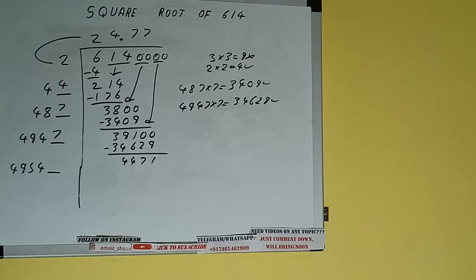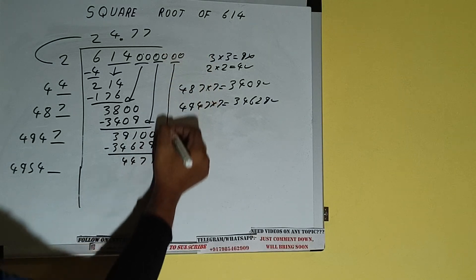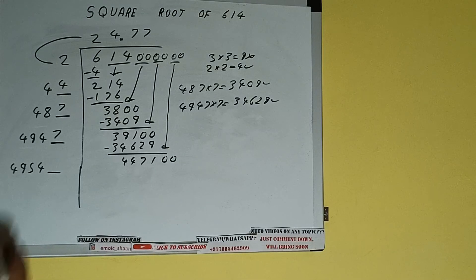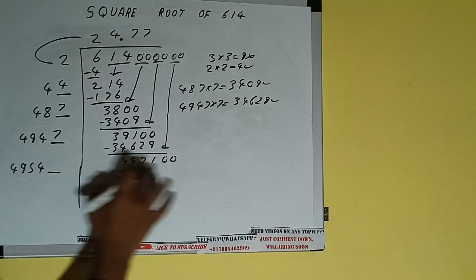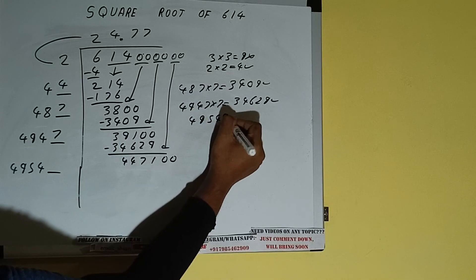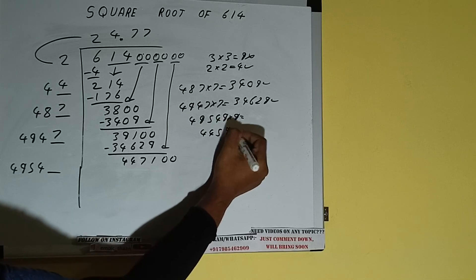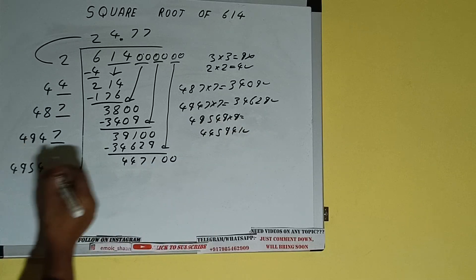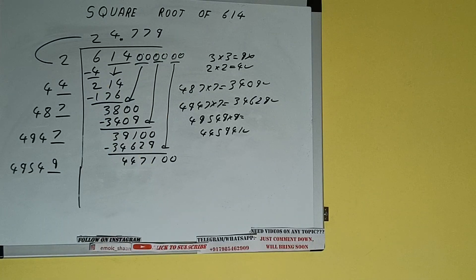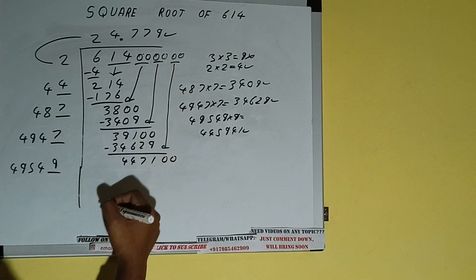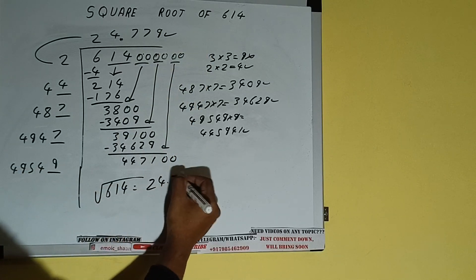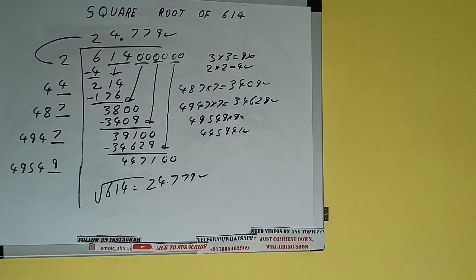Bring the next pair of zeros down and it will be 447100. Compare this 4954 and 447. 49 times 9 is 441, so we can try 9 times. 49549 into 9 we can try and we'll get 445,941, which is good to take. So 9 here and 9 here — but we don't need to calculate further because we got the answer correct to three decimal places. So the square root of 614 will be 24.779. If you found the video helpful please hit the like button, consider subscribing, and thanks for watching.